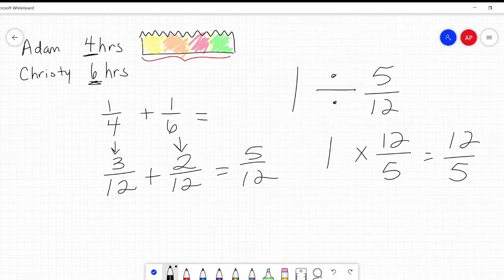Now that's an improper fraction. So let's change that. So that would be two and two fifths. Well, two fifths, what is that in minutes? There are 60 minutes in an hour. Two fifths of 60 is 24. So they will do it in two hours and 24 minutes.